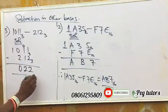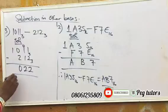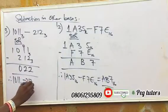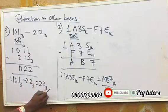And here nothing is left. So you have, therefore, 1011 base 3 minus 212 base 3 is equal to 22 base 3. Answer.